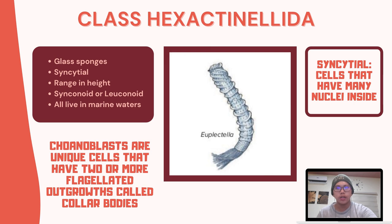The trabecular reticulum is bilayered, and its structure can either be sheet-like or tubular. Depending on the structure, either in between the sheets or inside the tubes is a collagenous mesohyl in which more specialized cell types occur, like archaeocytes and coanoblasts. Coanoblasts are unique cells that have two or more flagellated outgrowths called collar bodies. The flagella of these collar bodies beat to drive the flow of water, similar to choanocytes, where water flows over the collar bodies and food particles get collected. Hexactinellida all live in marine waters, mostly in the deep sea. An example of Hexactinellida is Euplectella.